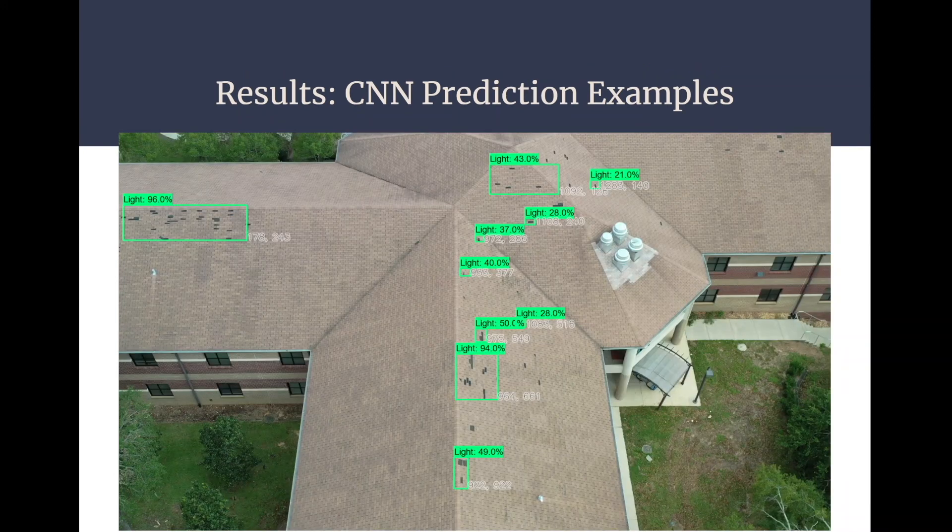Now over here are the prediction examples of the CNN. As can be observed in the pictures, there is a bounding box around each identified damage on the roof, as well as the position vector and percent of damage identified. So over here, for example, we have a bounding box showing there is some damage on this roof, the position vector pointing out where the damage is located, and the probability of this being actually a damage. So right here, we have a 94% probability of being a damage when compared to this one, which is 28% for light damage.